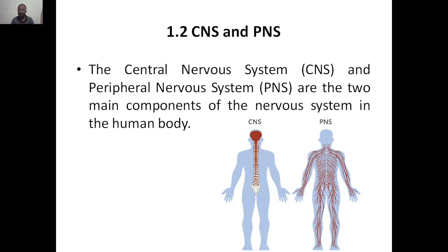CNS and PNS — that is Central Nervous System and Peripheral Nervous System — are two main components of the Nervous System in the human body. This PNS and CNS plays a very important role. CNS, altogether, is only one Nervous System. Our brain has got only one Nervous System, but it is divided based on particular regions or particular functions.